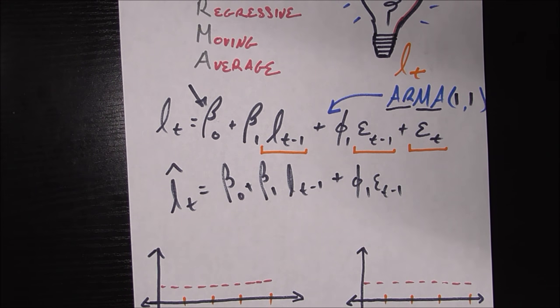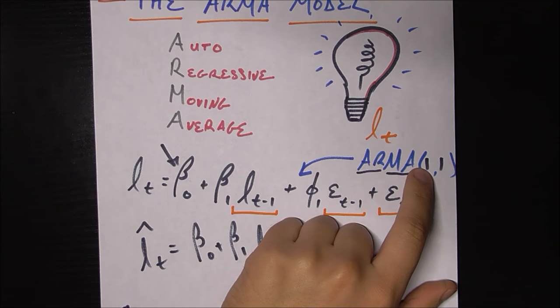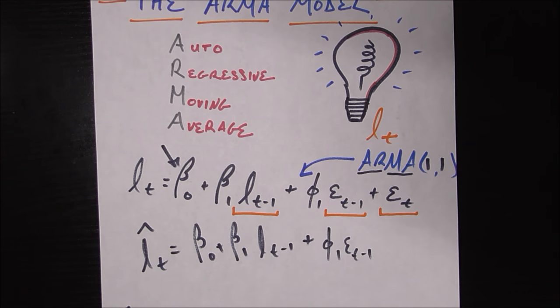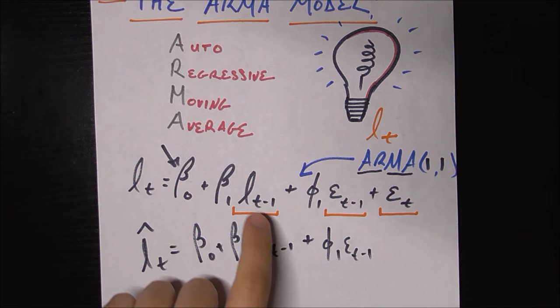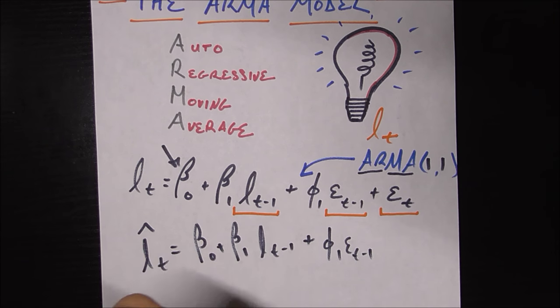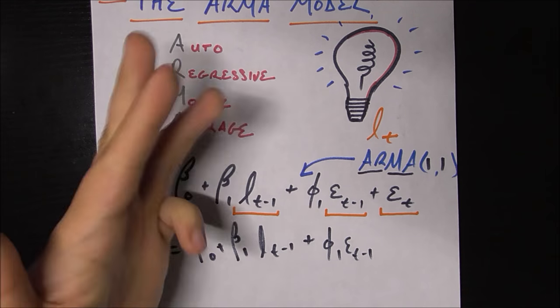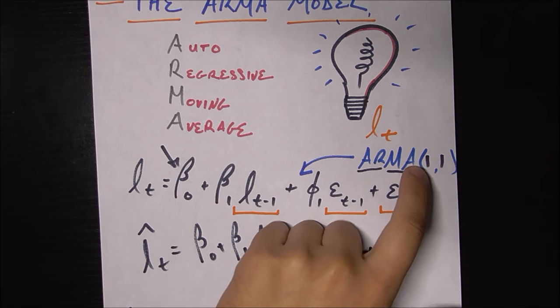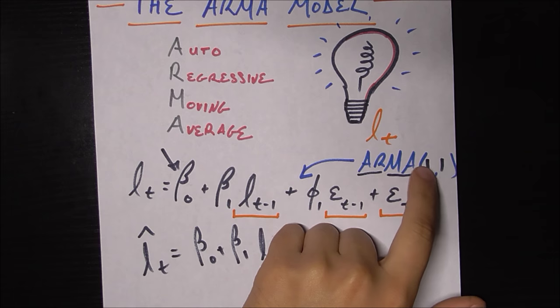It's probably pretty easy for you to see if I change this 1 to like a 3, if I change this other one to like a 4, what would change in the model. Instead of having just light bulbs last month, I would have light bulbs last month, two months ago, three months ago, four months ago, whatever I want for my AR lag, my AR order here.